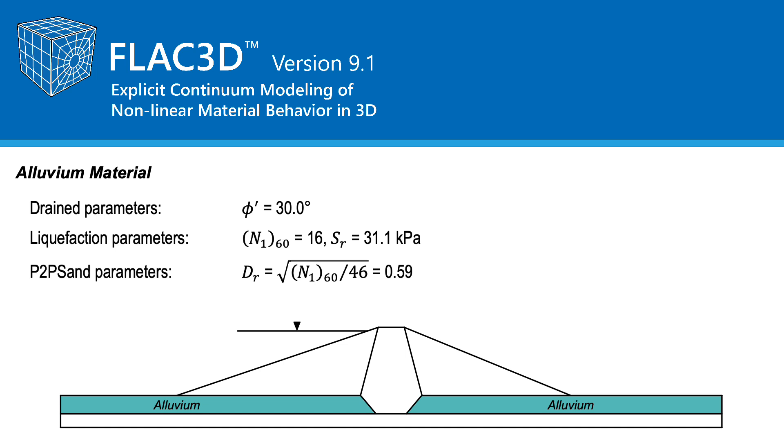Before the earthquake, the alluvium is drained with a drained friction angle of 30 degrees. During the earthquake, changes in excess pore pressure during shaking need to be modeled as well as the associated reduction in stiffness, strength, and accumulated strains. The alluvium will be modeled as a sandy soil with a density representative of normalized standard penetration resistance N160 equal to 16. At this N160, the associated residual strength will be equal to 31.1 kPa. The P2P sand model will be used to model the cyclic mobility liquefaction response during shaking. The primary parameter for the P2P sand constitutive model is the relative density and will be selected as 0.59. The residual shear strength is not a material parameter in the P2P sand model, but is used in a post-earthquake analysis with the Mohr-Coulomb model.